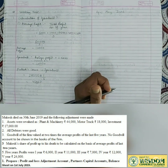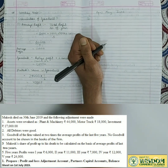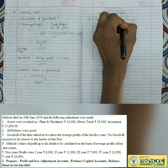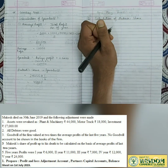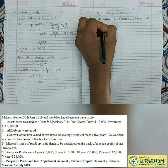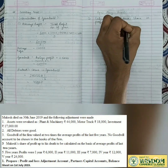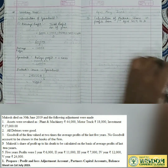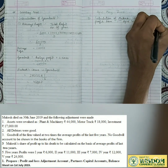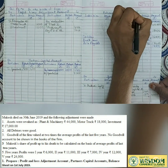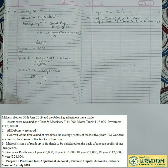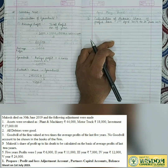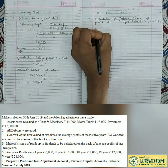Working Note 2: Calculation of Mukesh's profit. Financial year started 1st April 2019; Mukesh died 30th June 2019. He worked for 3 months. Per the question, profit is calculated on the basis of average profit of last 2 years. The 4th and 5th year profits are used. Formula: Average Profit = Total Profit ÷ Number of Years.